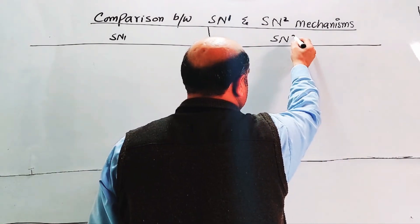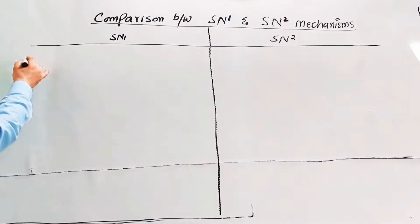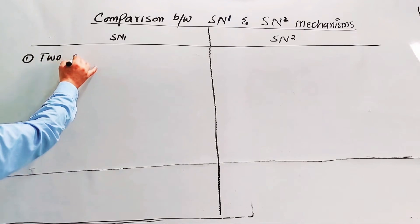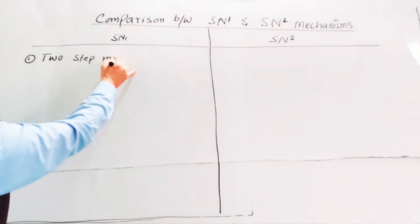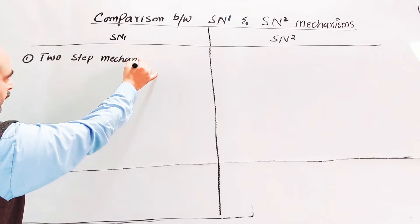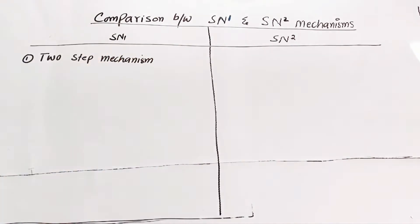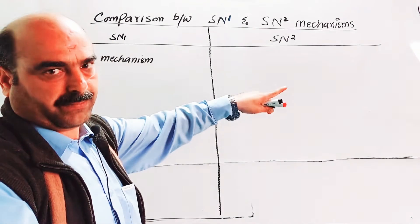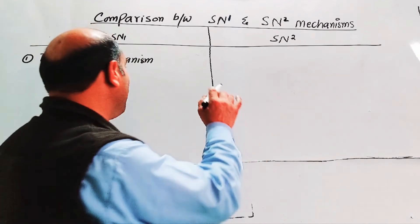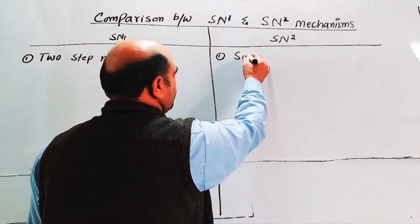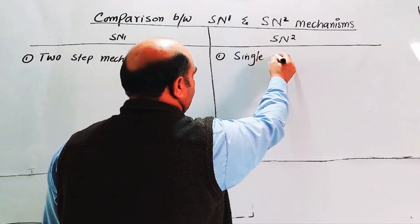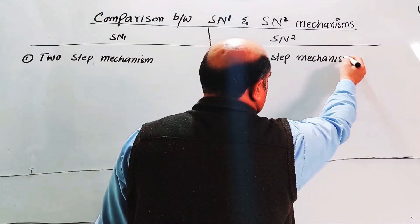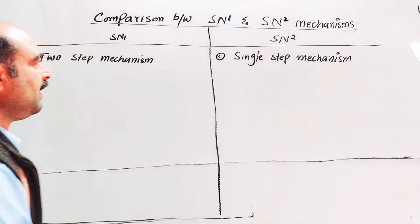First difference: SN1 is a two-step mechanism — this mechanism is completed in two steps. While SN2 mechanism happens in one step, it is a single-step mechanism. This is the first difference.